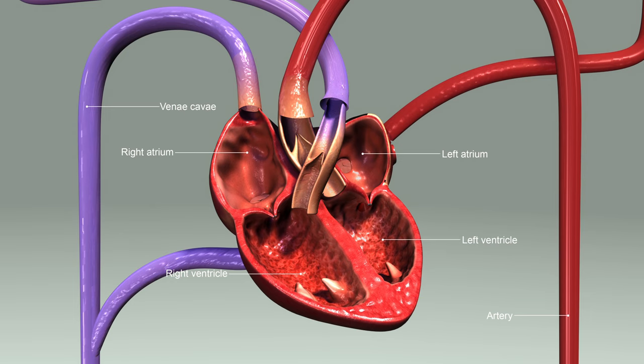Here, we have an image that highlights the four chambers of the heart. The upper chambers, called the atria, receive blood from the body and the lungs. The right atrium receives oxygen-poor blood from the body, while the left atrium receives oxygen-rich blood from the lungs. The lower chambers, called the ventricles, pump blood out of the heart. The right ventricle pumps the oxygen-poor blood to the lungs, and the left ventricle pumps the oxygen-rich blood to the rest of the body.